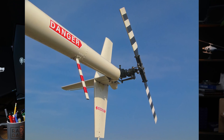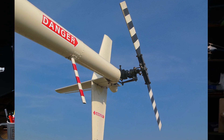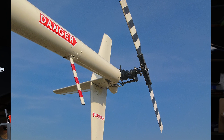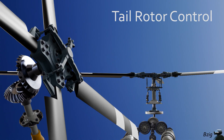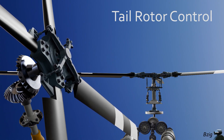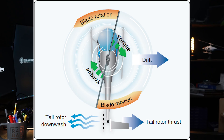The tail rotor consists of a small set of blades mounted on the vertical or near-vertical axis at the end of the helicopter's tail boom. These blades spin rapidly, similar to the main rotor, and the angle of their blades, called the pitch, can be adjusted by the pilot using the anti-torque pedals. By increasing the pitch of the tail rotor blades, more air is pushed sideways, increasing thrust, and decreasing the pitch reduces thrust.